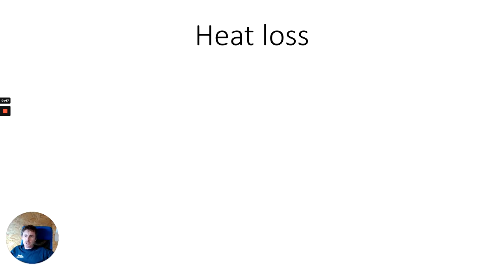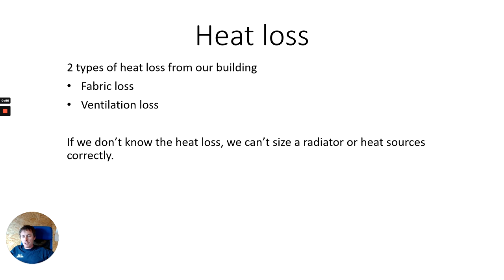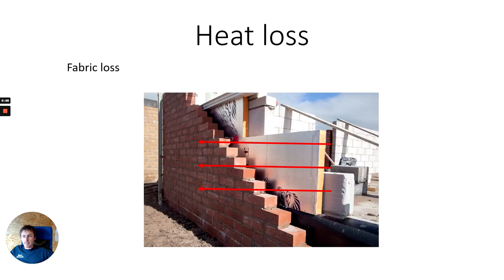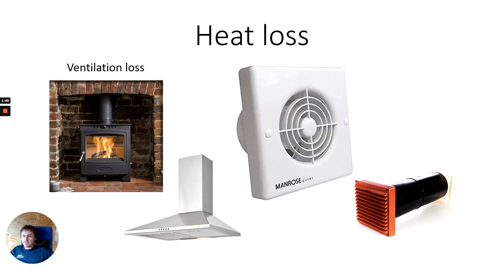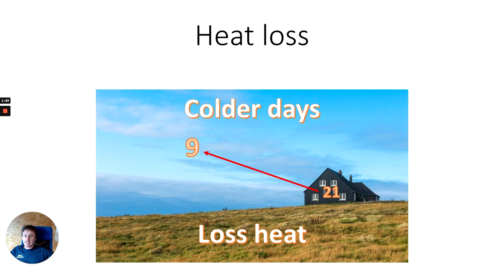There are two types of heat loss for a property: fabric loss and ventilation loss. If we don't know the heat loss, we can't size a radiator or heat source correctly. Fabric loss is what's physically passing through all your walls, the fabric of the building, windows, etc. Ventilation loss covers things like log burners, flue liners, kitchen ventilation, bathroom ventilation, and purpose-built ventilation in the brickwork itself. On hotter days your property will actually be gaining heat from outside, and on colder days you'll be losing heat to outside.